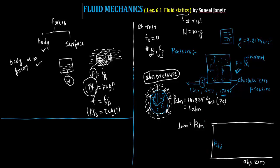For example, for Mars the atmospheric pressure would be a different value, but it is still an absolute pressure because we are comparing that atmospheric pressure of Mars with respect to absolute zero. Any pressure we compare with the absolute zero line is termed absolute pressure.